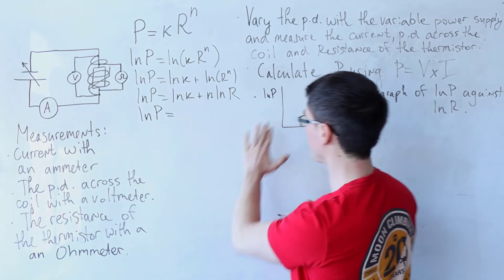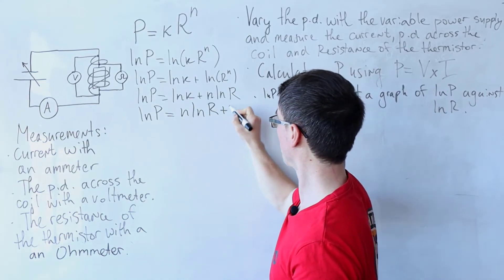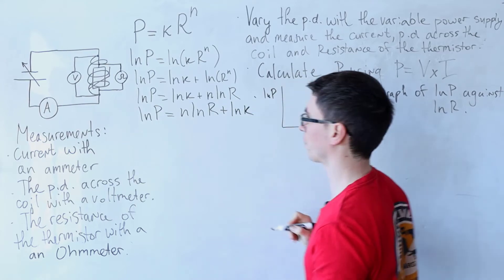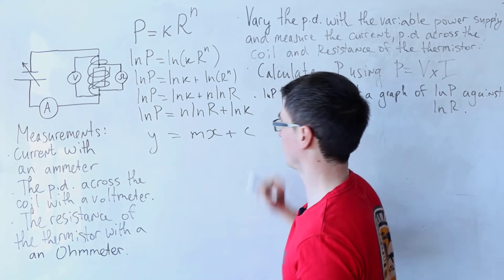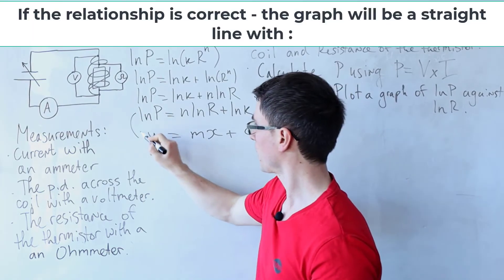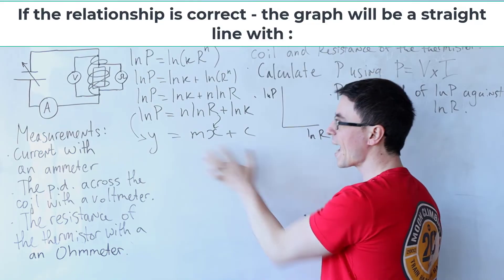Let's put our equation into linear form. What we're going to get is ln of P, that's on the y-axis, is equal to n ln of R plus the natural log of k. This is y equals mx plus c. If ln of P is on the y-axis, if ln of R is on the x-axis, then our gradient m will be equal to the constant n.